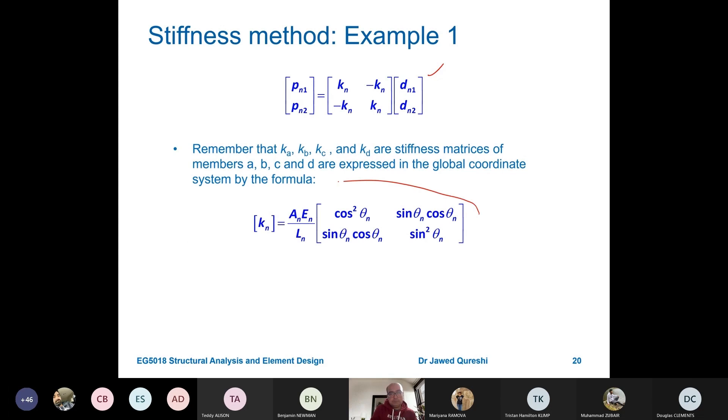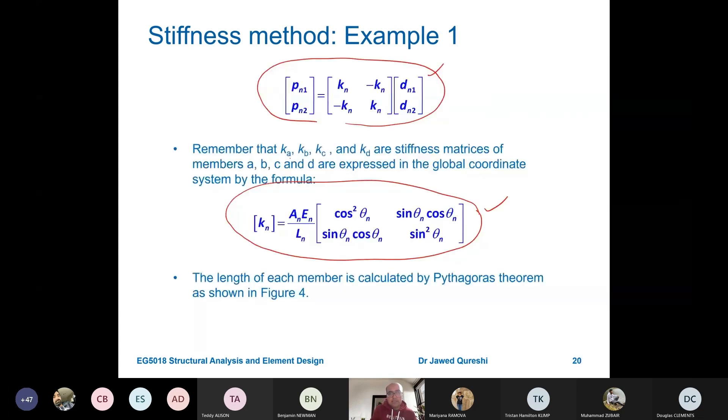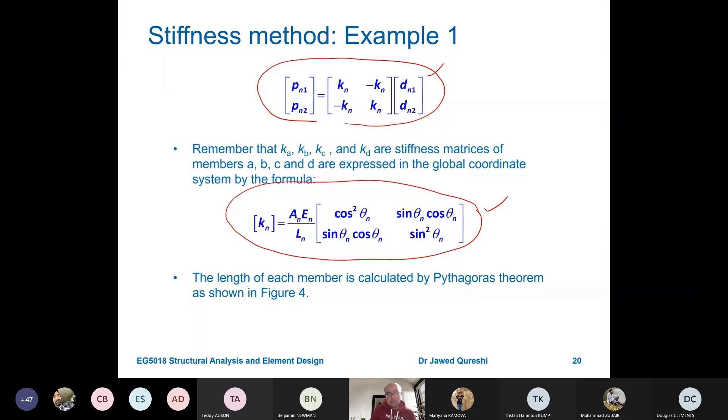Now our next task is to find out these KA, KB, KC and KD. These are element stiffness matrices. The first thing is that we will use this formula. We will use this formula KN. Now length of each member is calculated by Pythagoras theorem as I mentioned. KA, KB, KC, KD, these are stiffness matrices for members A, B, and C and D correspondingly and these are expressed in global coordinate system like this.